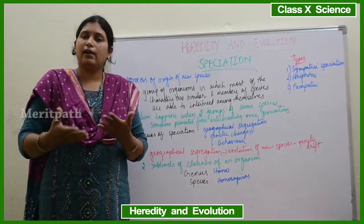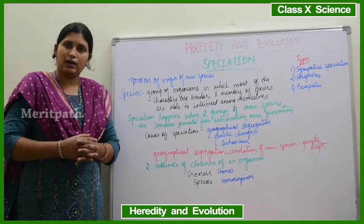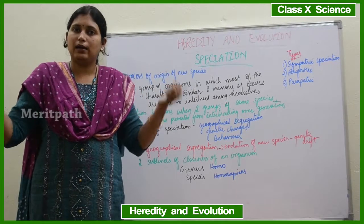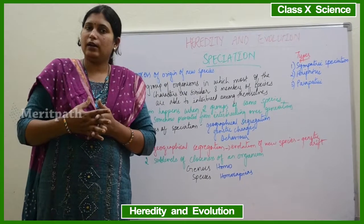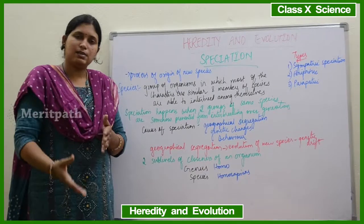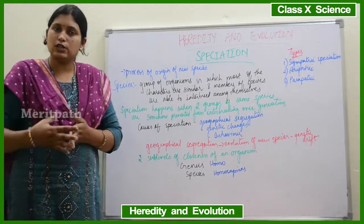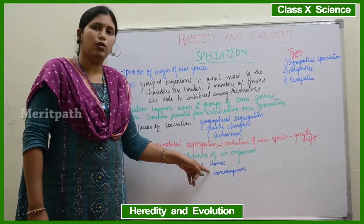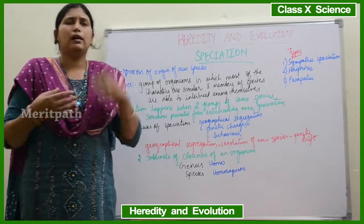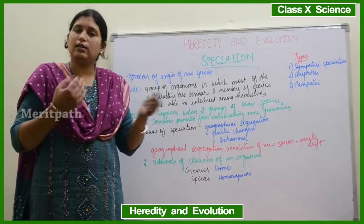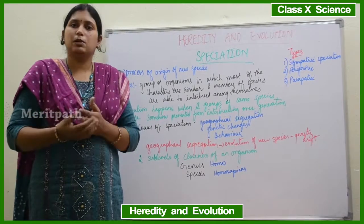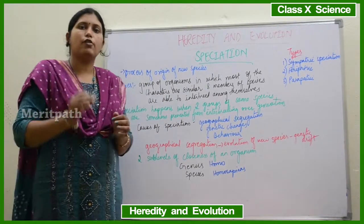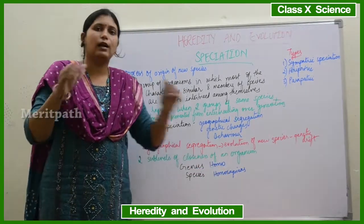In science, the closeness of an organism is classified by genus and species. For example, human beings belong to the genus Homo and the species Homo sapiens. Millions of years ago there were other species too, like Homo neanderthals, but all those are now extinct. The only species of the genus Homo living on Earth today is Homo sapiens.